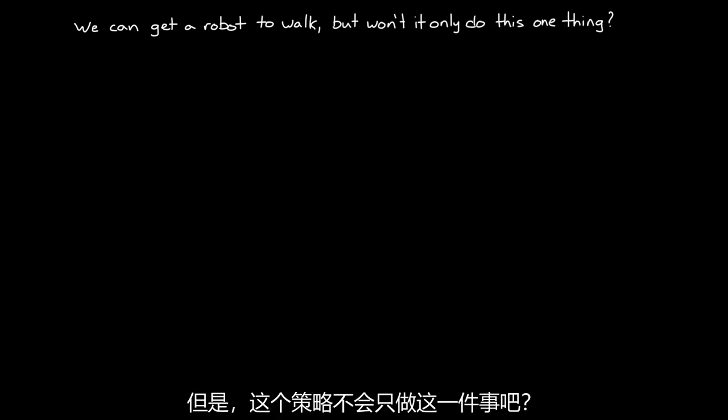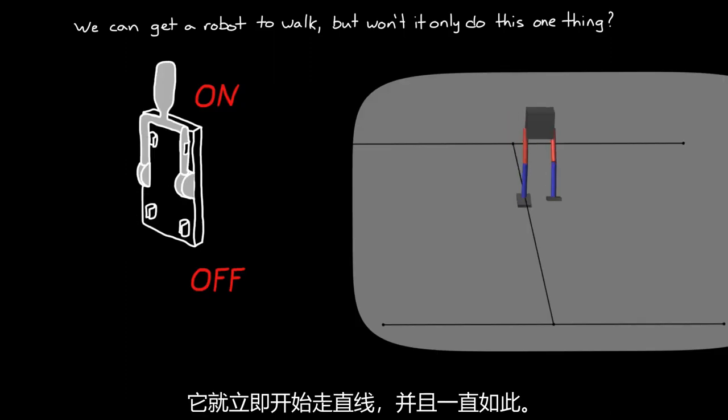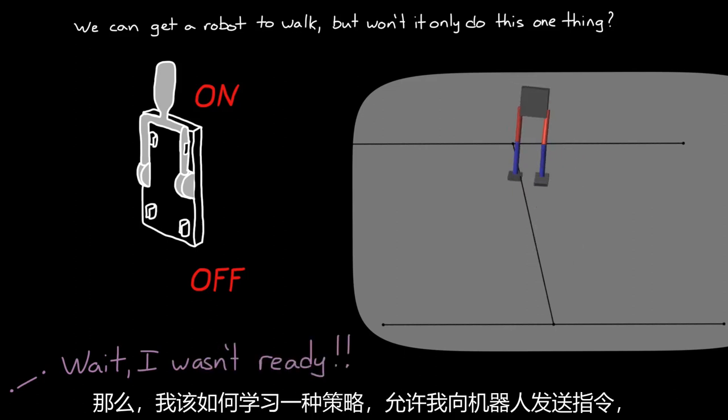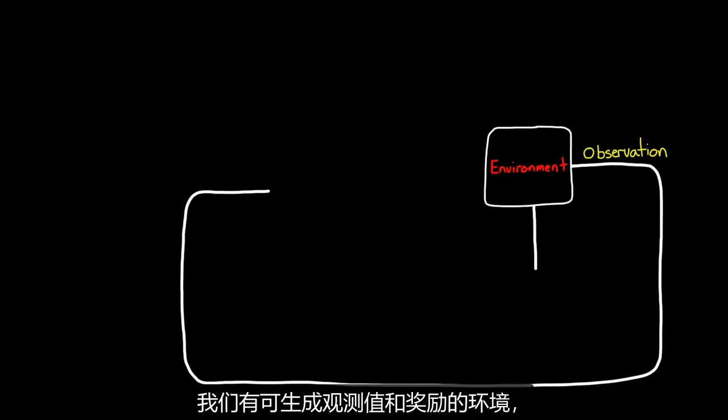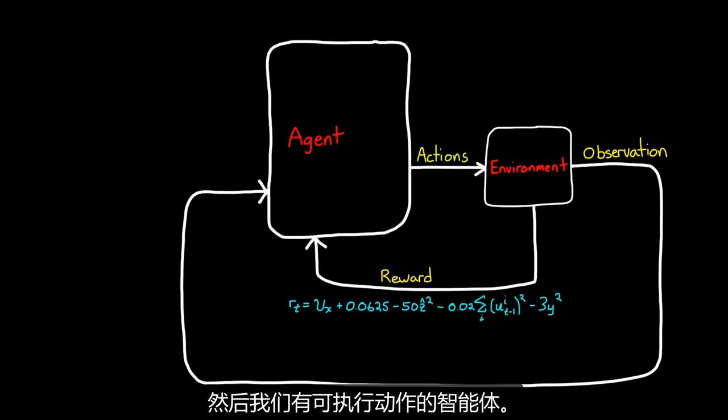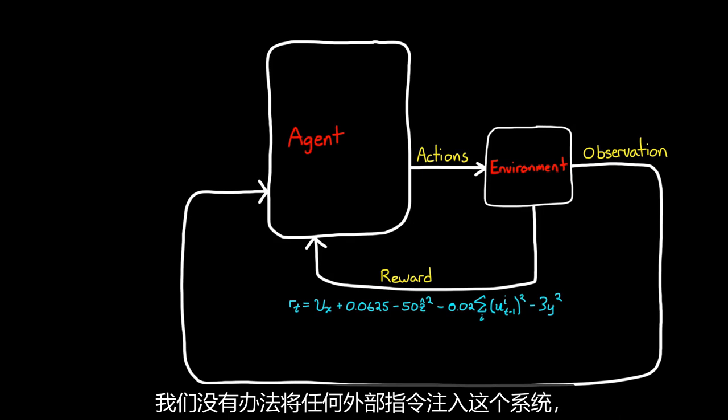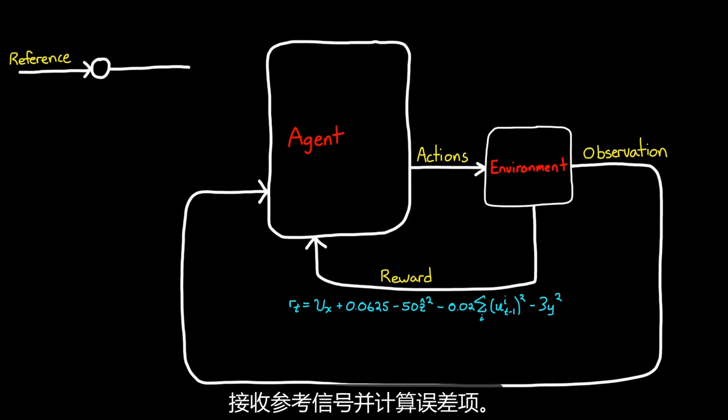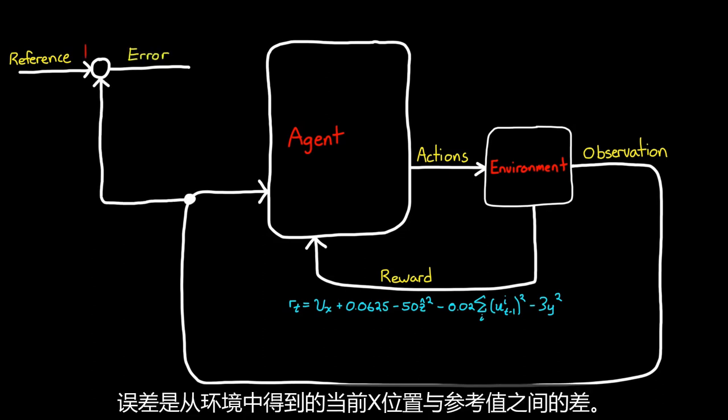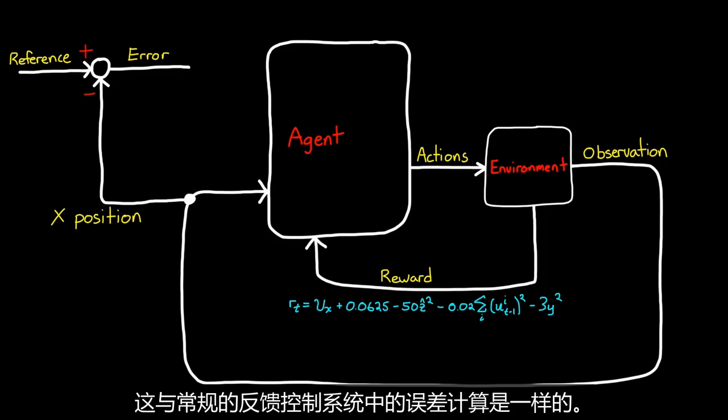Okay, at this point, here's a question that you might have. Sure, we can use RL to get a robot to walk in a straight line. However, won't this policy do only this one thing? For instance, if I deploy this policy and turn on my robot, it's just going to instantly start walking straight forever. So how can I learn a policy that will let me send commands to the robot to walk where I want it to walk? Well, let's think about that. Right now, this is what our system looks like. We have the environment that generates the observations and the reward, and then we have the agent that generates the actions. There's no way for us to inject any outside commands into this system, and there's no way for our agent to respond to them, even if we had them. So we need to write some additional logic outside of the agent that receives a reference signal and calculates an error term. The error is the difference between the current x position, which we can get from the environment, and the reference value. This is the same error calculation that we would have in a normal feedback control system.